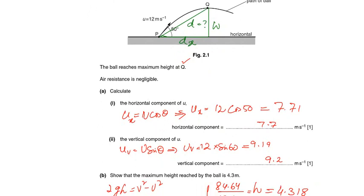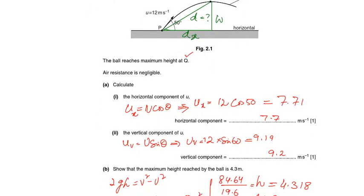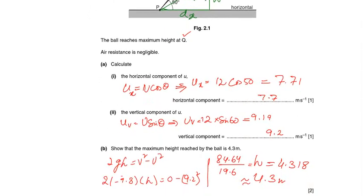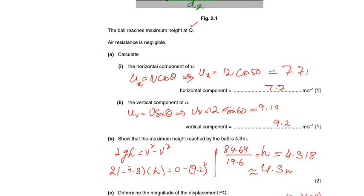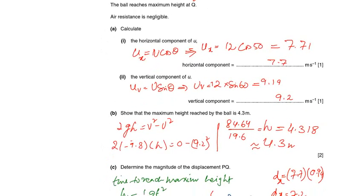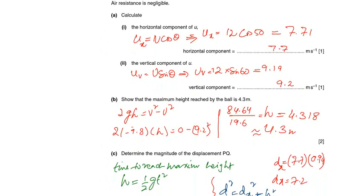The vertical component of u is u sine theta. Uy equals 12 times sine 50, which equals 9.19. Rounding off gives 9.2 meters per second. The maximum height reached by the ball is 4.3 meters.